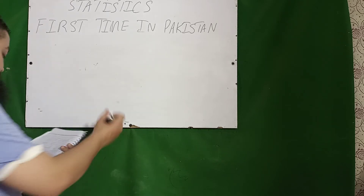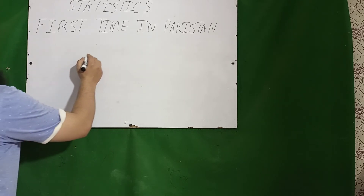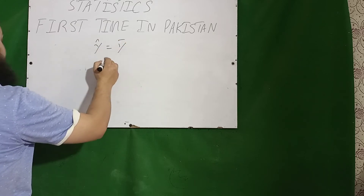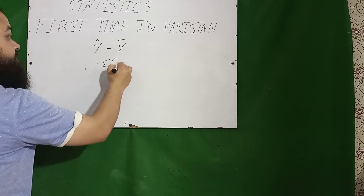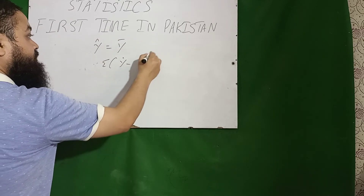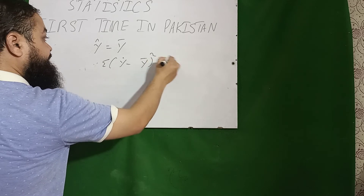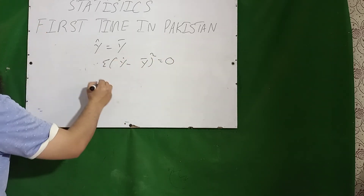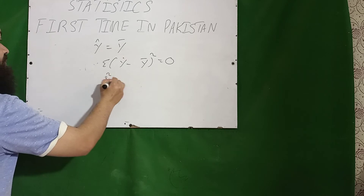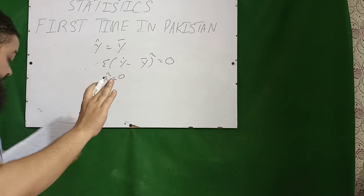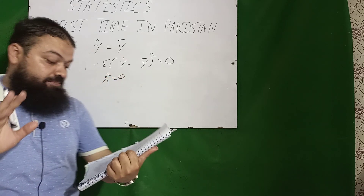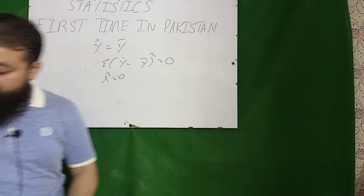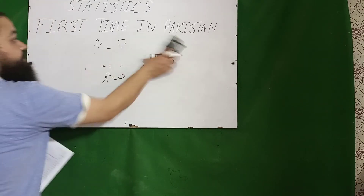Whenever ŷ = ȳ, then Σ(ŷ − ȳ)² = 0, which means explained variation is zero and R-square will be equal to zero — no variation has been explained by the independent variables.